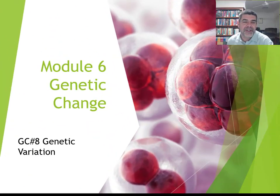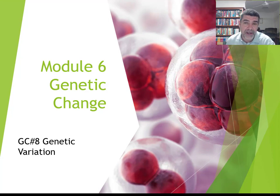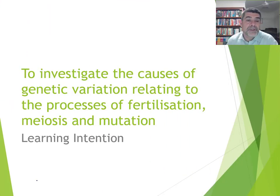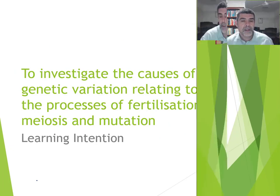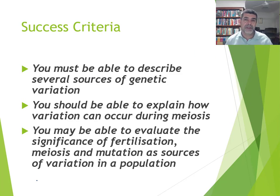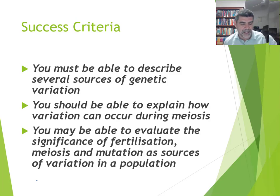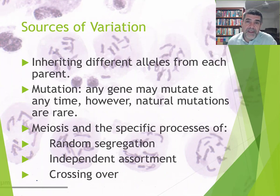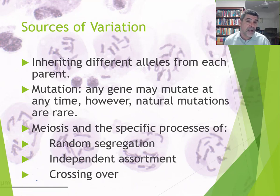Hi students, welcome to HSC Biology and Module 6, Genetic Change. This is video number 8, and we're going to review a lot of what we already know about genetic variation. In this video, we're going to investigate some of the causes of genetic variation relating to the processes of fertilization, meiosis and mutation. We need to describe several sources of genetic variation, explain how variation can occur during meiosis, and look at fertilization, meiosis and mutation as sources of variation in a population. This is a very important driver of evolution through natural selection.